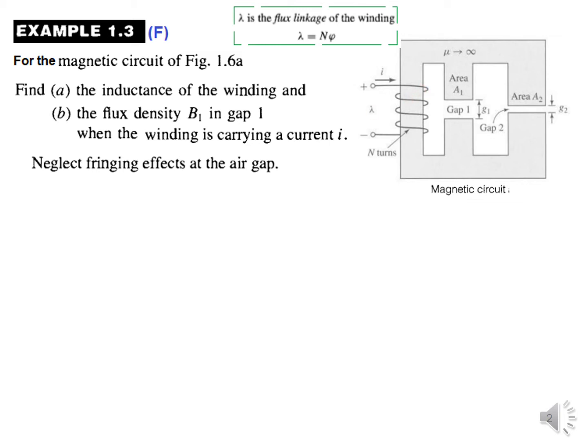The flux linkage is N multiplied by phi, so the flux and number of turns multiplied. That is actually the total flux we can say, which is lambda or flux linkage.